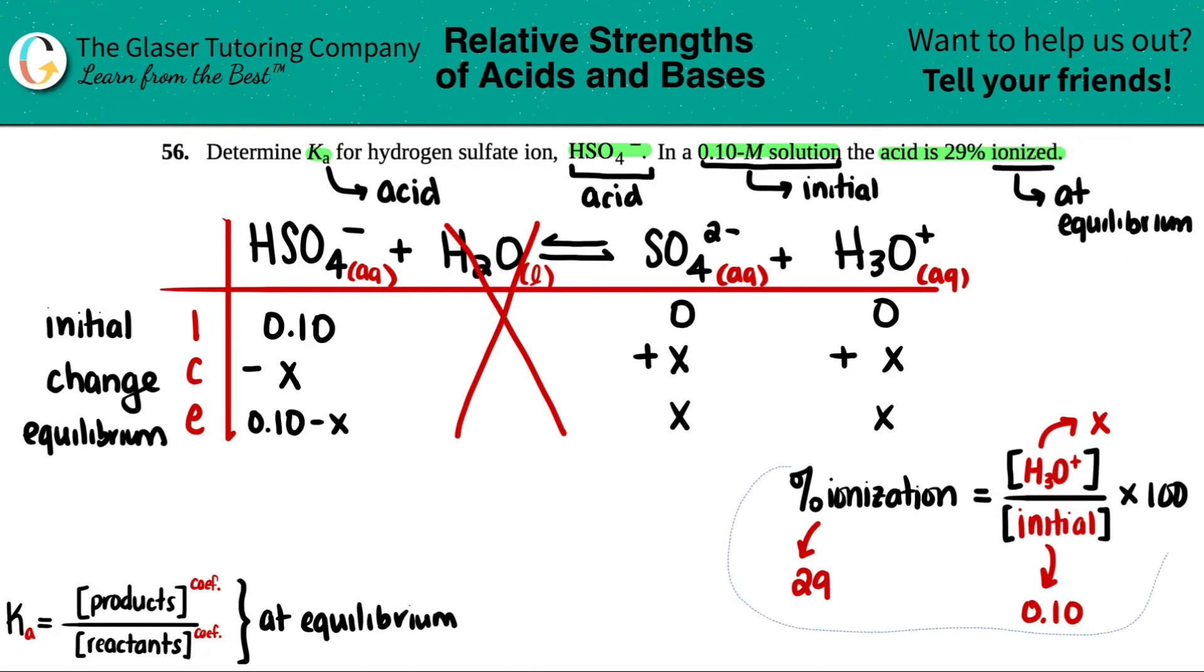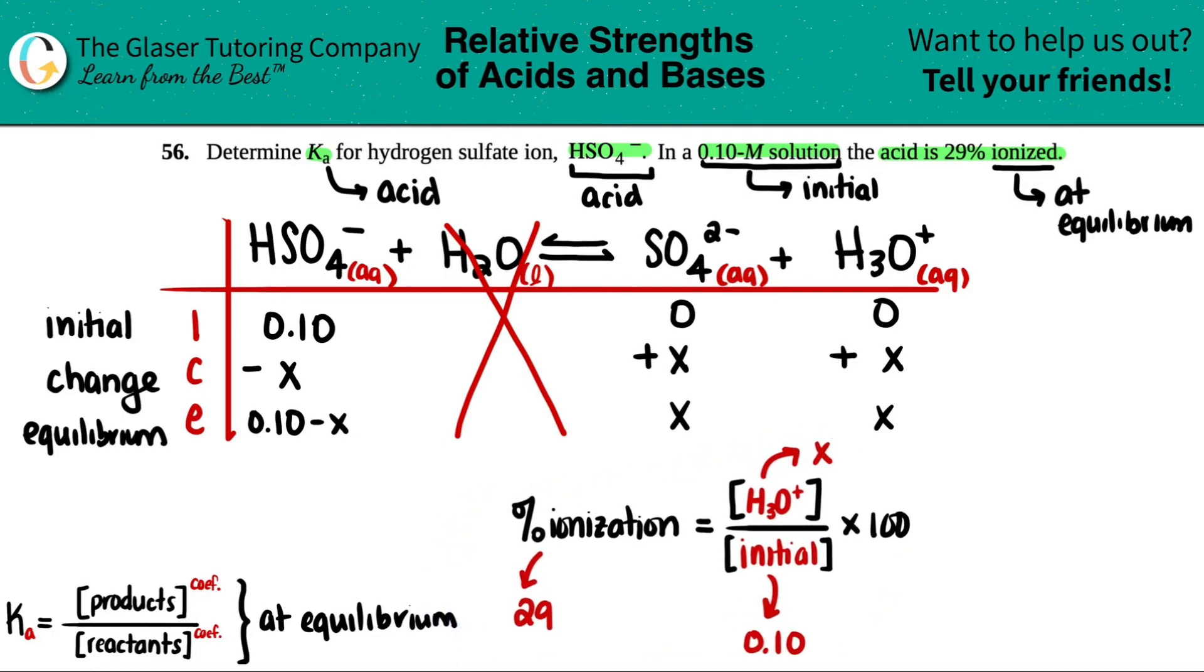I'll bring this over for a little bit, do the math on the other side, and then I'll probably have to erase it. So 29 equals something divided by something times 100. We have X divided by 0.10. If I divide by 100 first, you get X over 0.10. 29 divided by 100 is 0.29. Then we cross multiply. 0.29 times 0.1 gives 0.029.